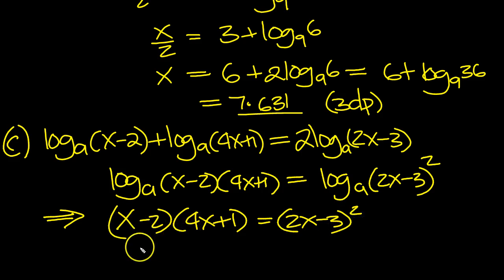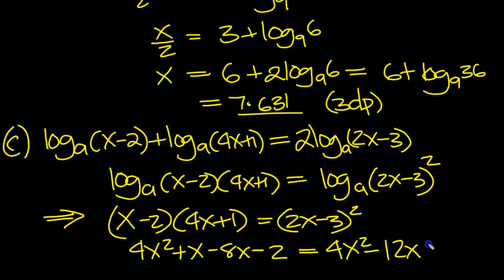So let's expand the brackets: 4x squared plus x minus 8x there, and then minus times plus is a minus, 1 times 2. This squared is 4x squared minus 6 minus 6, so minus 12x plus 9.